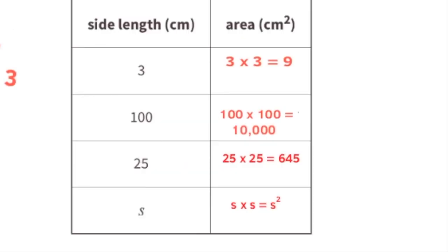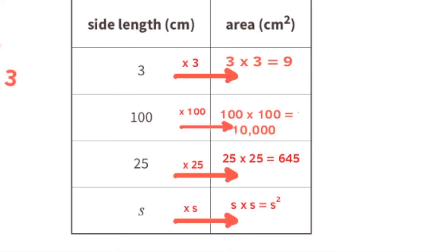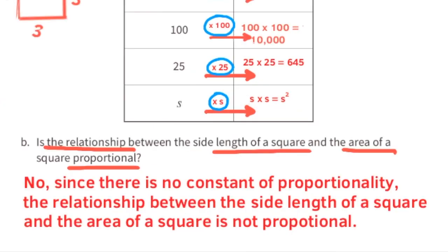For the first square, the side length times 3 equals the area; for the second, times 100; for the third, times 25; and for the last, times s. As shown circled in blue, the side lengths are multiplied by different numbers to get the area. Since there is no constant of proportionality, the answer is no — the relationship is not proportional.